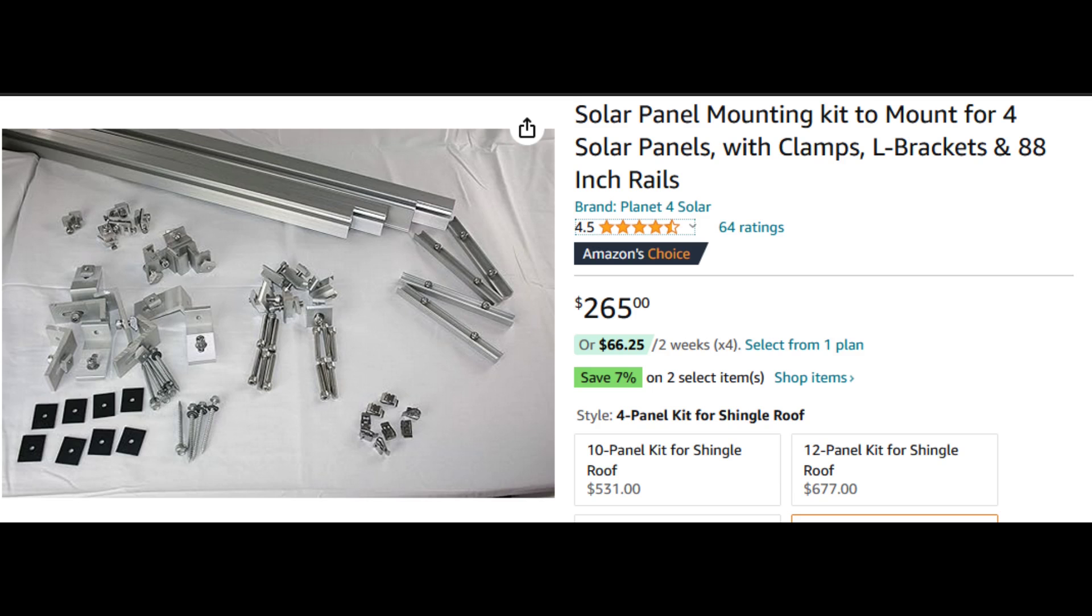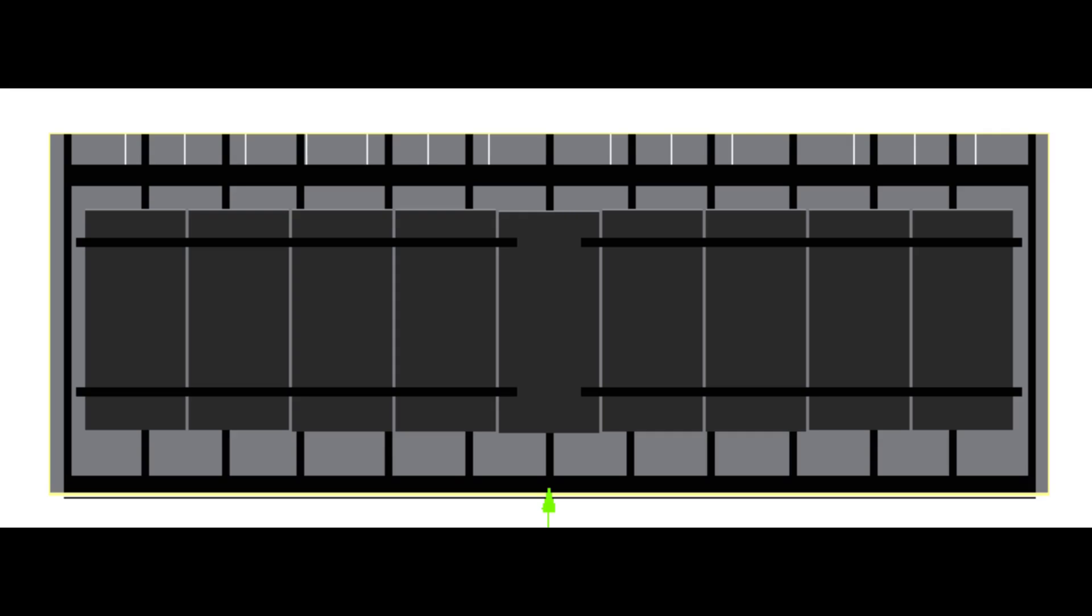Here's the mounting kit I chose for the panels. It was designed for 4 full size panels and has 8 support brackets and 4 seven foot three inch rails. But it will fit 4 of my smaller panels on each pair of rails, with the 9th panel straddling the 2 sets of rails in the middle.